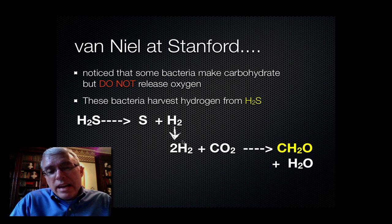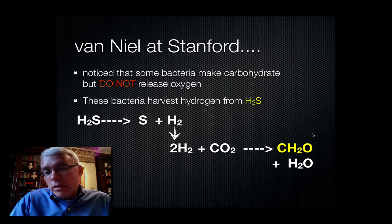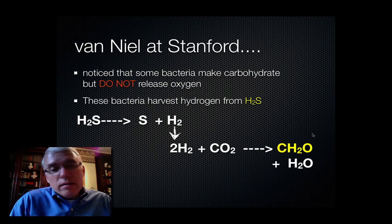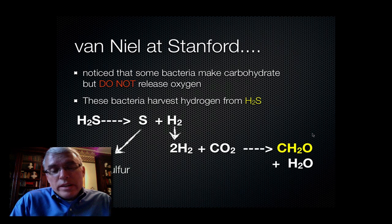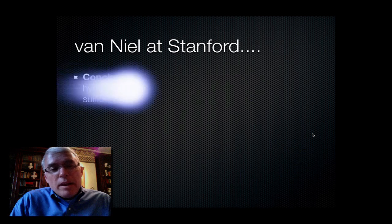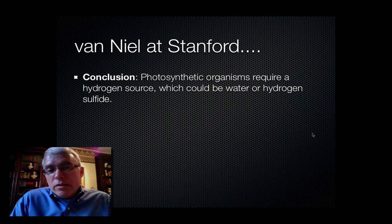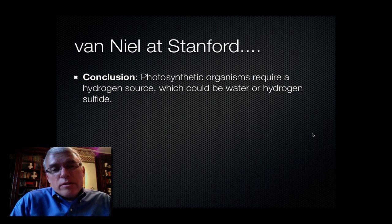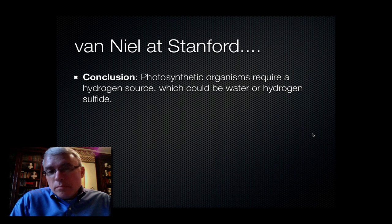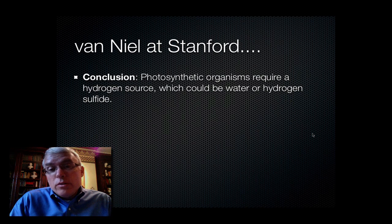So what he found out that these bacteria were doing is they're taking H2S and they're breaking it up into sulfur and hydrogen, and they're taking that hydrogen and adding it to a carbon source, carbon dioxide, to produce their carbohydrate. So they're being producers without using water and without releasing oxygen. Instead, they release elemental or yellow crystal sulfur into their environment.